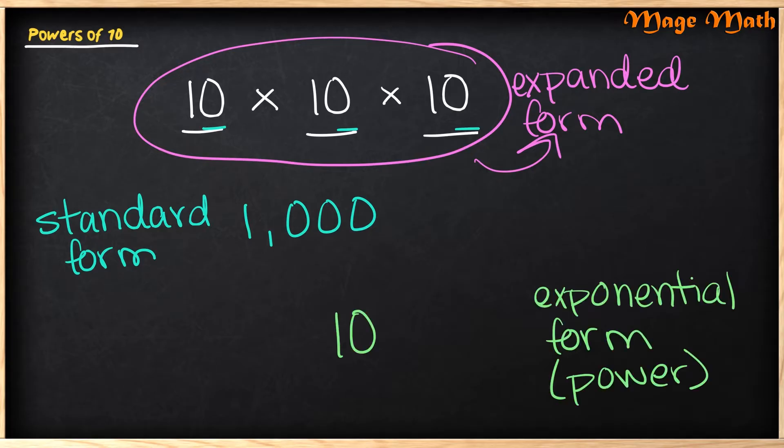The last way that we can write this is called the exponential form. We also call this the power of 10. So I see that I wrote my 10 below. Then all I do is count how many times we're multiplying 10 by itself. In this case, it's one, two, three. Then I use an exponent, which is a small number in the corner, as three. 10 to the third power means the same as 1,000, the same as 10 times 10 times 10.